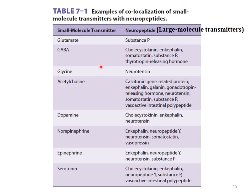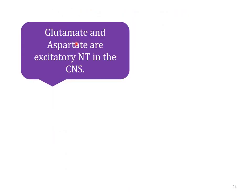There are two types of neurotransmitters: small molecule transmitters and large molecule transmitters (also called neuropeptides). Examples of large molecule transmitters include Substance P. Small molecule transmitters include glutamate, GABA, glycine, acetylcholine, dopamine, norepinephrine, epinephrine, and serotonin — these are the important ones. Out of these, some are excitatory and some are inhibitory, which we will discuss in detail in synaptic transmission.